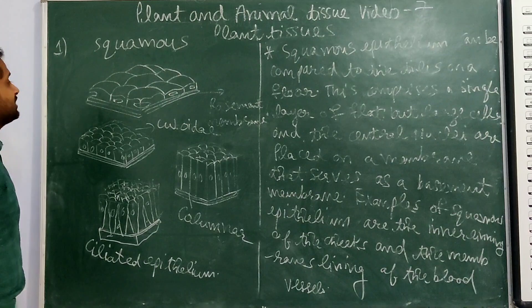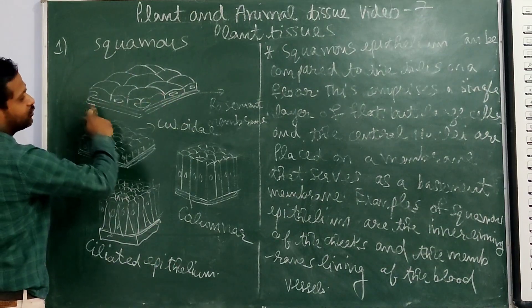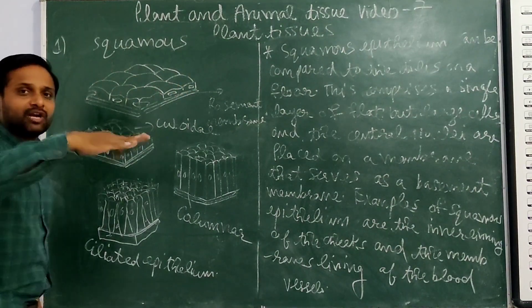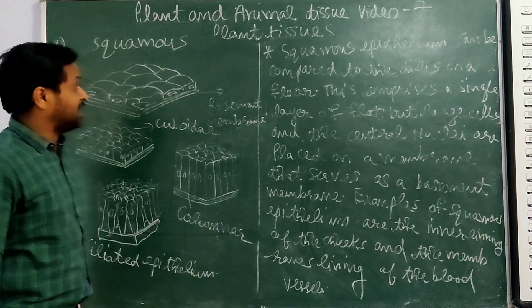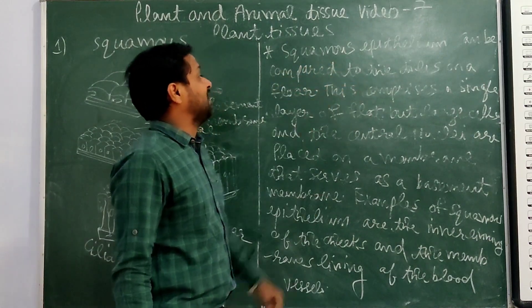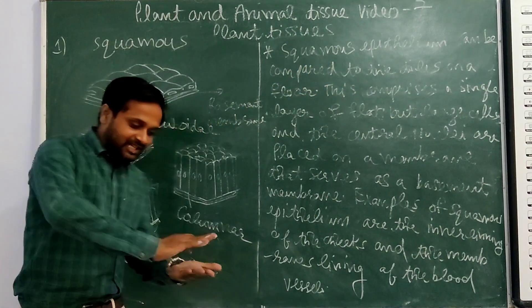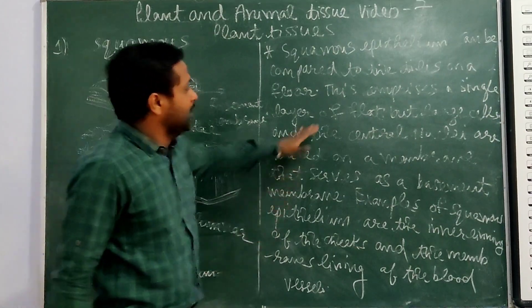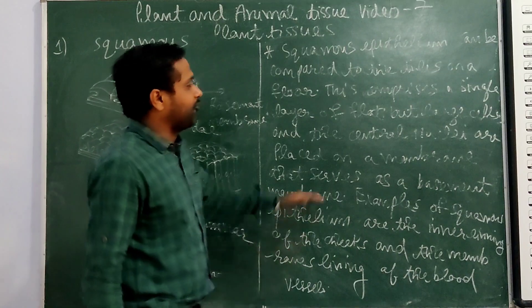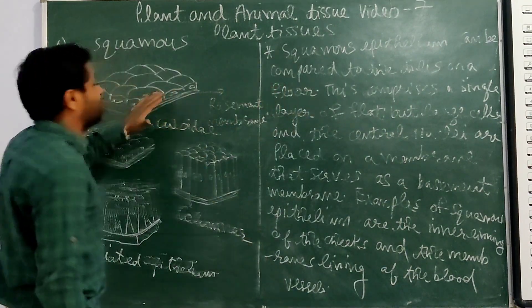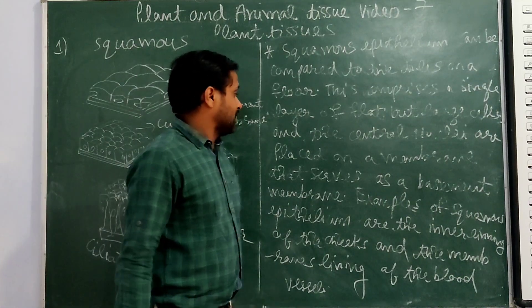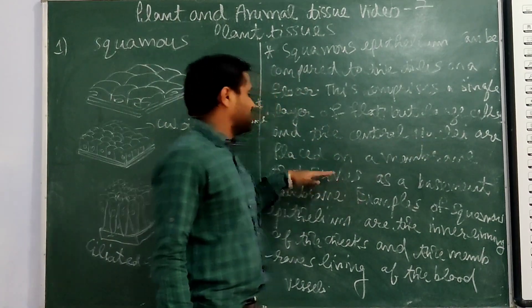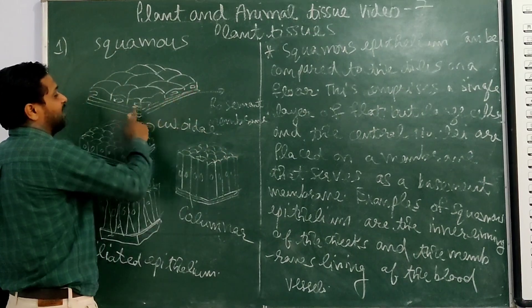So first of all we see about the squamous epithelial tissue. This was the basement membrane, and this was the cell. This was a flat structure, like a tile. Squamous epithelial can be compared to tiles on the floor — tiles are very flat, you do not put one tile on top of the other. This comprises a single layer of flat but large cells, with the central nuclei placed on the basement membrane.